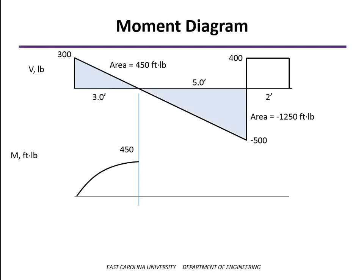The next triangular region is all below the axis, so the area is negative with a value of 1,250 foot-pounds. Subtracting that from 450 takes us down to a moment value of minus 800 foot-pounds at point B. We start with a slope of zero, the slope is negative the whole way and becomes steeper as we go. Finally, the last region is 800 foot-pounds, which added to minus 800 brings us back to zero at a constant slope. So we start at zero and end at zero — that's our moment diagram.